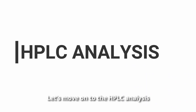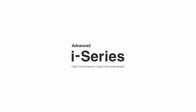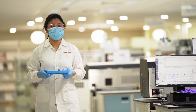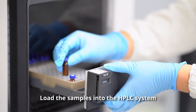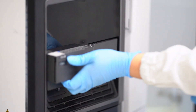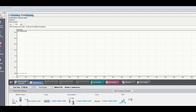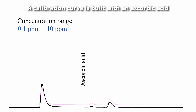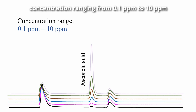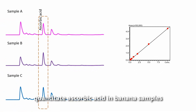Let's move on to the HPLC analysis. Load the analysis method and inject the samples. A calibration curve is built with an ascorbic acid concentration ranging from 0.1 ppm to 10 ppm. This calibration curve is then used to quantitate the ascorbic acid in banana samples.